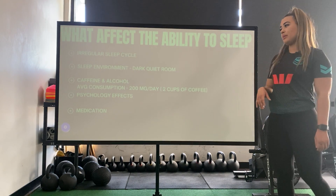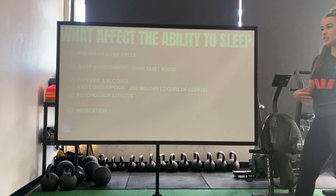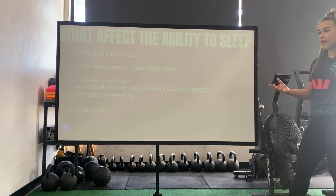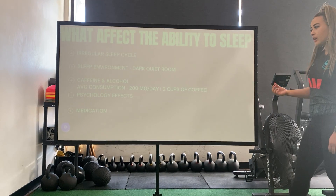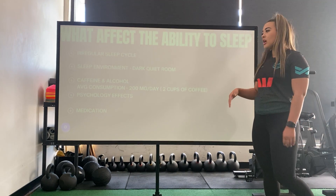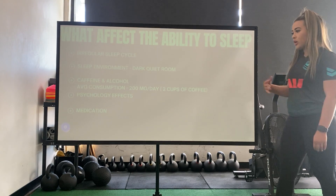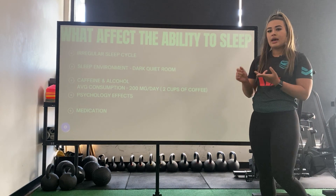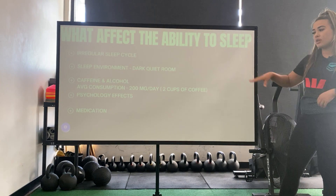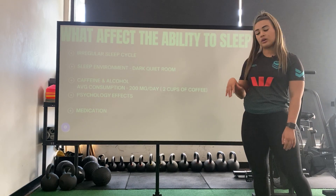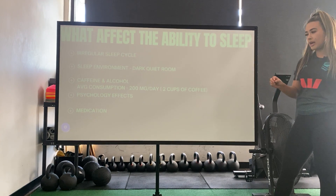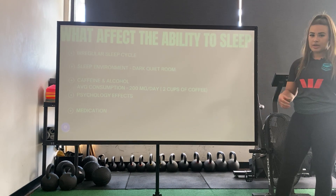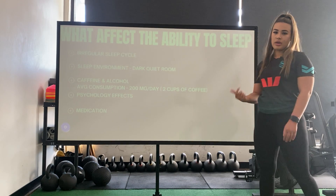What affects the ability to sleep? There are multiple reasons. The most common is irregular sleep cycles — not having a decent routine. Number two is sleep environment: a dark, quiet room versus bright light will affect your sleep. Number three is caffeine and alcohol. Psychological effects also play a role — depression disorders, bad days, or just mentally not being with it, constantly overthinking in that stress or fight-or-flight mode. Medications can also affect your sleep, such as antidepressants, or anything related to illness.